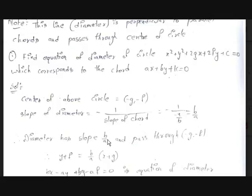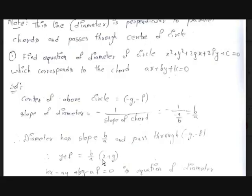We know the slope of the diameter is b/a and it passes through the point (−g, −f). Using the slope-point form y − y₁ = m(x − x₁): y − (−f) = (b/a)(x − (−g)), so y + f = (b/a)(x + g). Simplifying: a(y + f) = b(x + g), which gives bx − ay + bg − af = 0. This is the equation of the diameter.